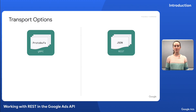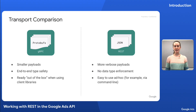First off, it's important to note that there are two different means of accessing the Google Ads API. REST is one of them, and the other is gRPC. These two transport methods access the same exact backend, but they have some important differences. With gRPC, we tend to have a smaller payload size, which makes it the more efficient transport method between the two.